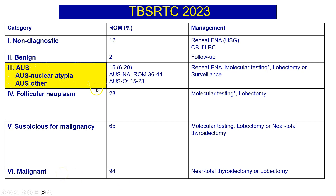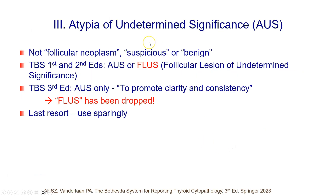We will be focusing here on the AUS category. AUS, atypia of undetermined significance, means findings are not those of a follicular neoplasm or suspicious for malignancy, and they are also not those of a definite benign nodule. Therefore, it is an indeterminate category.